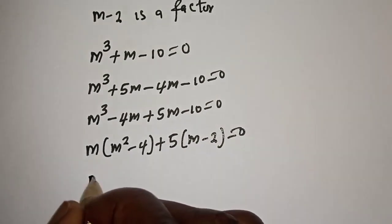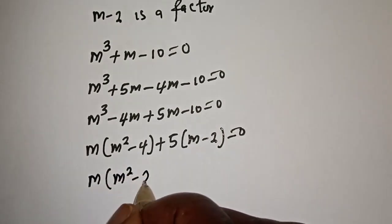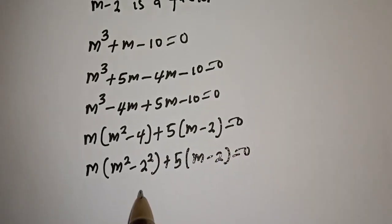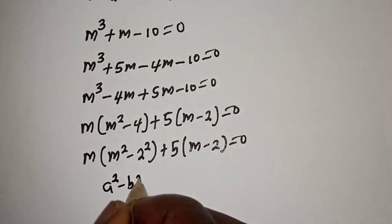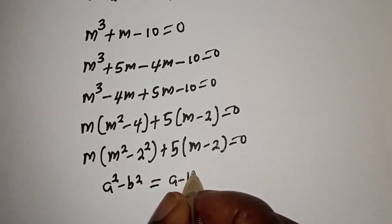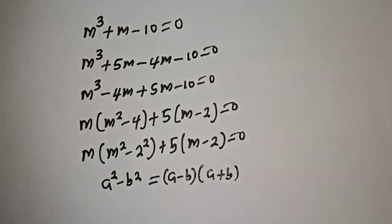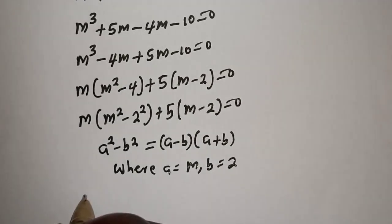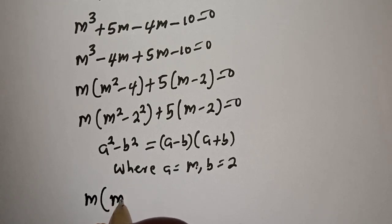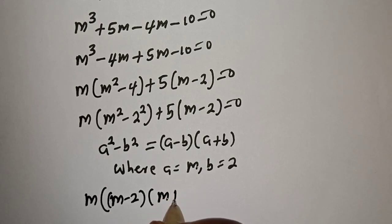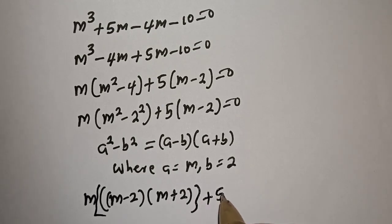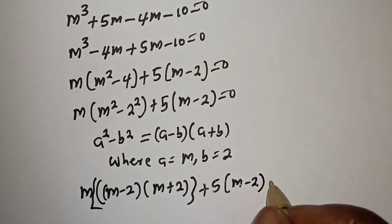This becomes m times (m squared minus 4) plus 5(m minus 2) equals 0. Now applying the difference of squares, a squared minus b squared equals (a minus b)(a plus b), where a equals m and b equals 2. So this is m times (m minus 2)(m plus 2) plus 5(m minus 2) equals 0.